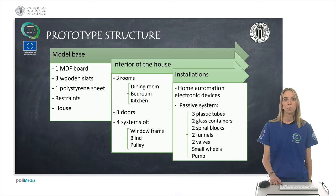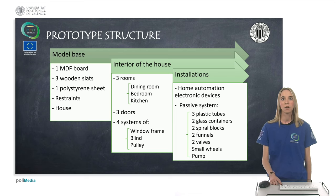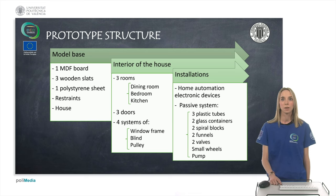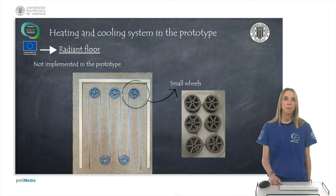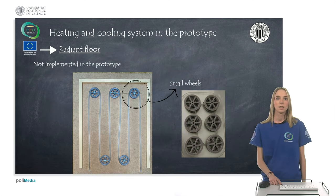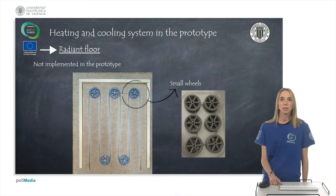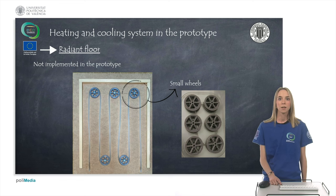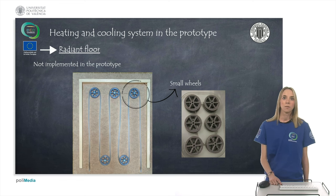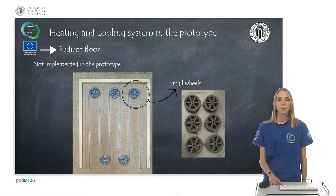The model is divided into three parts, and I will now focus on the installation section, specifically on the passive system. The heating and cooling system in the prototype is divided into two: the underfloor heating and the air system.